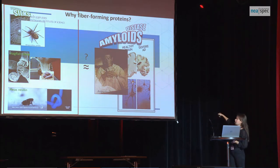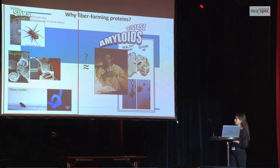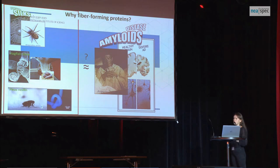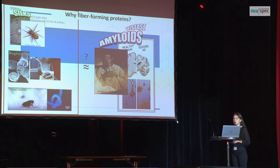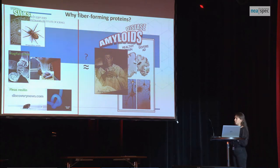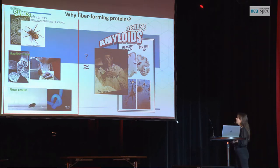In biology, the protein fibrillation phenomena are associated with two opposed biological roles. On one hand, the transformation of protein monomers into supramolecular structures generally called amyloids — nanoscale fibers — is associated with the development of more than 60 diseases, among them neurodegenerative ones, including Alzheimer's, Parkinson's, Huntington's, and diabetes type 2.